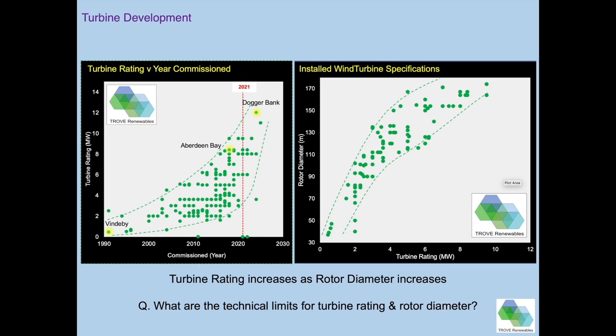From the Trove database, plotting turbine rating through time with Vindaby, Aberdeen Bay, and Dogger Bank highlighted, you can see that turbines started very small and have grown increasingly larger with no apparent halt to that trend. The reason is shown in the graph on the right: as you increase the rotor diameter the turbine rating picks up significantly, though the curve does look like it may be turning over slightly. What the technical limits for turbine rating or rotor diameter are remains an open question.